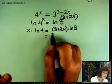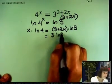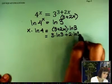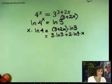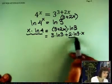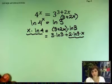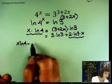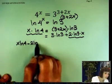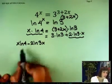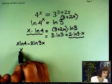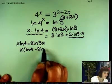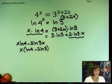Let's open this up. That means 3 times ln of 3 plus 2 times ln of 3 times x. Watch. This one has x in it. This one has x in it. So let's move them to the same side. x ln of 4 minus 2 ln of 3x. Let's factor x out. ln of 4 minus 2 ln of 3. That's the left-hand side.